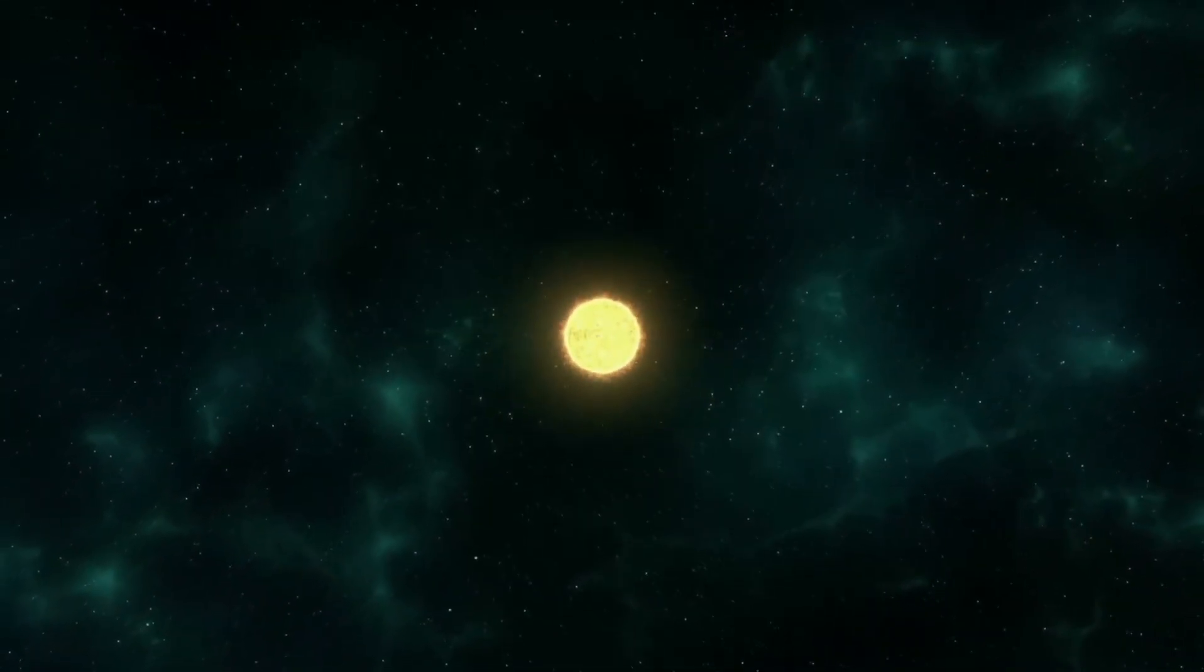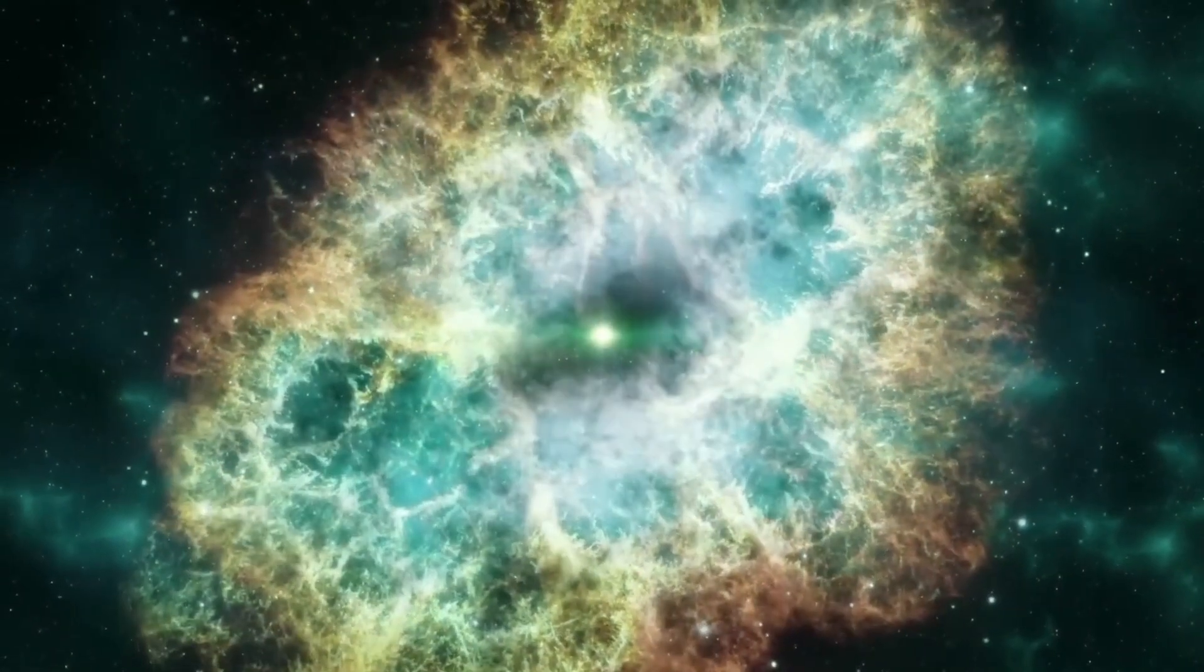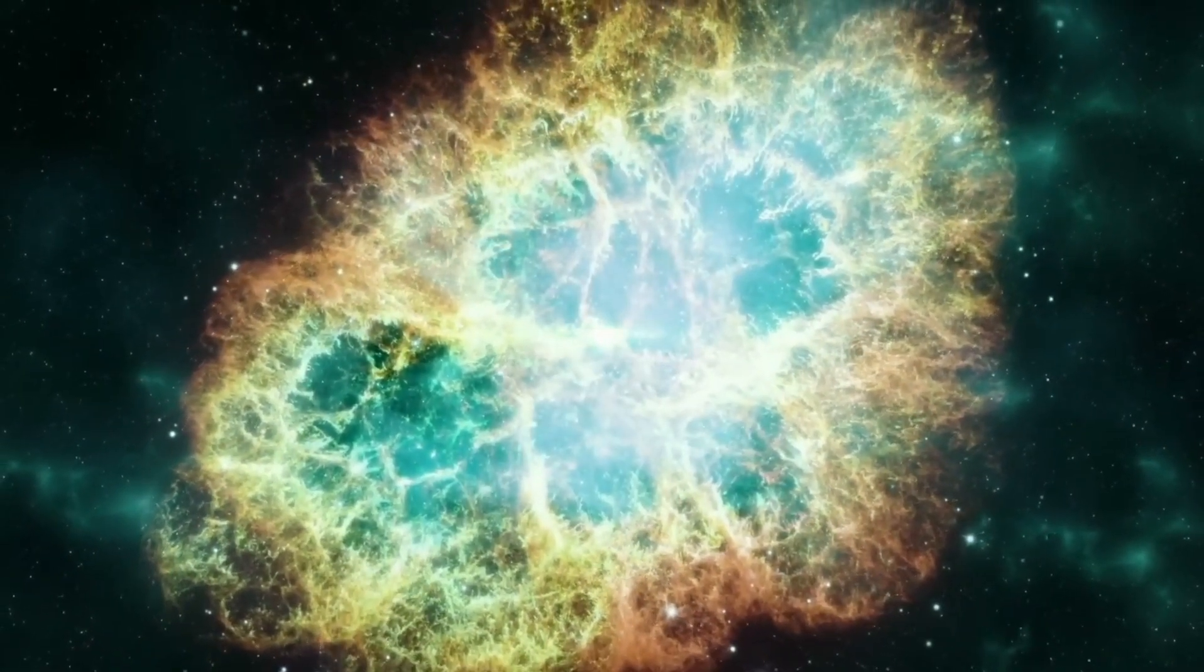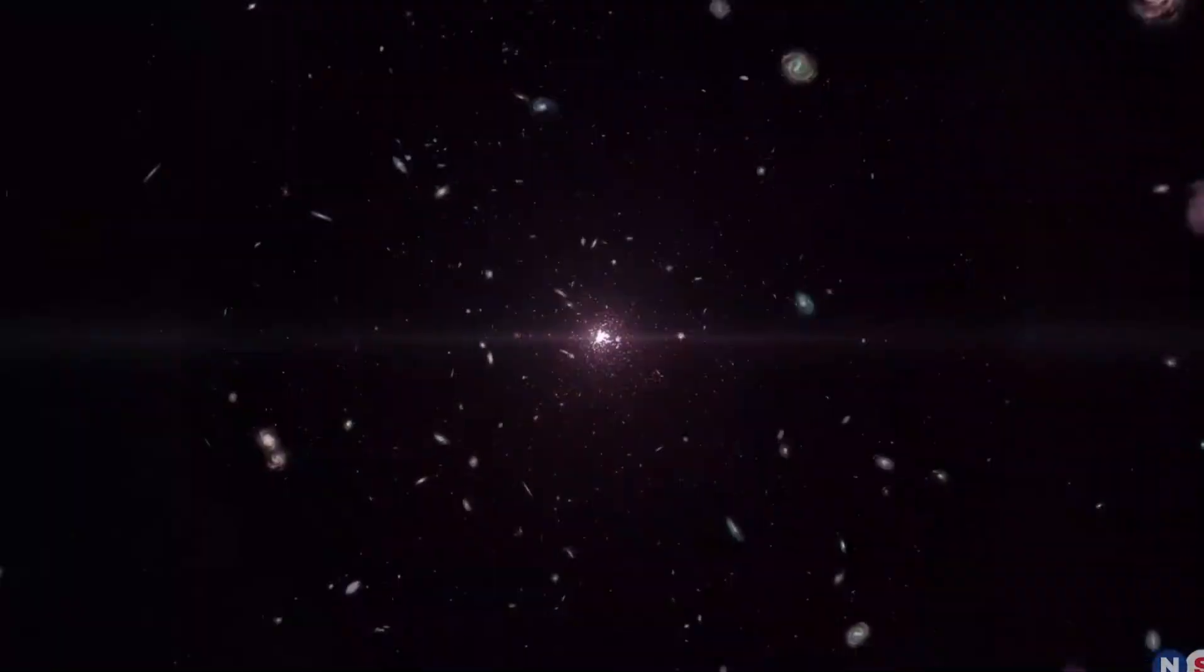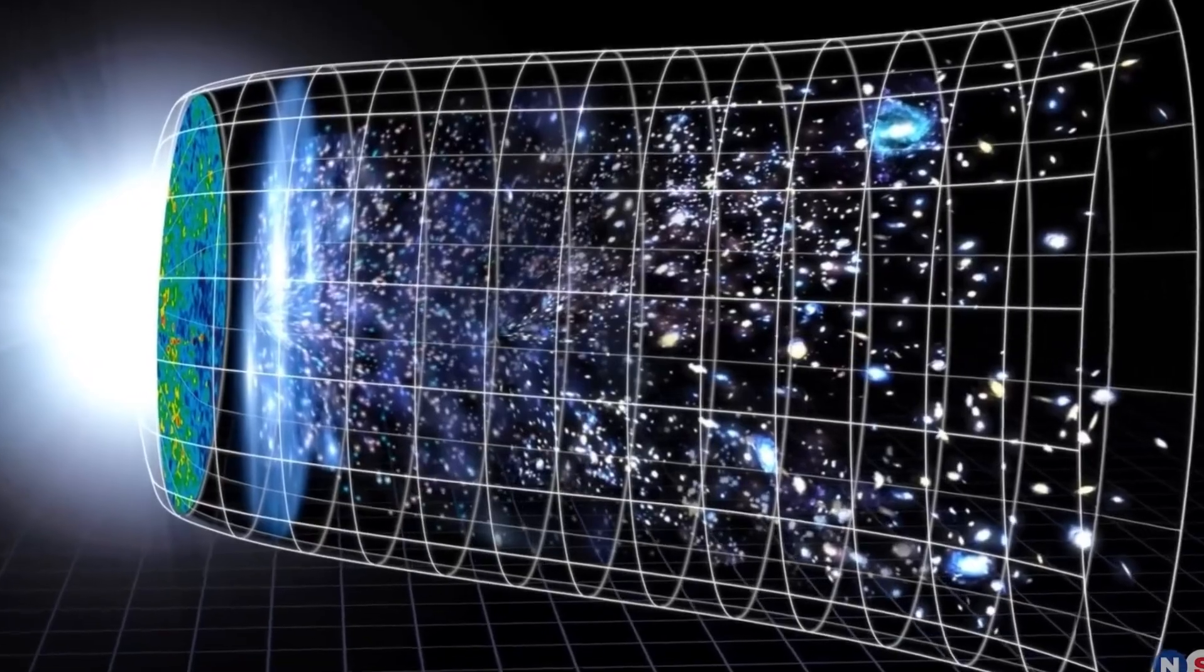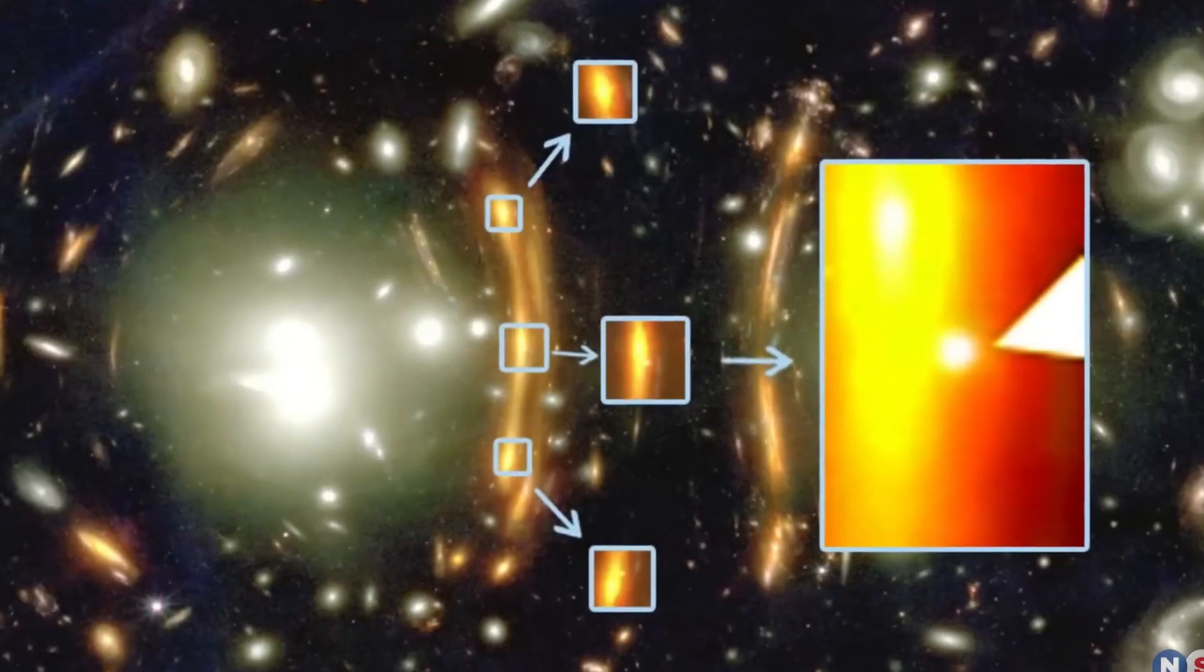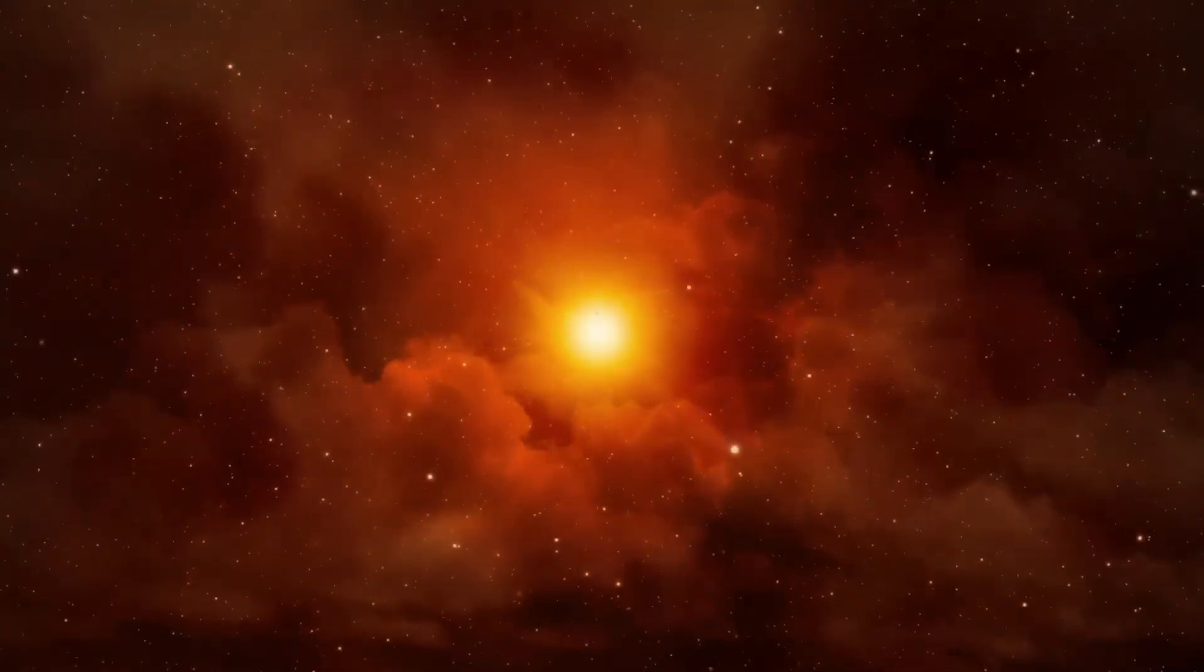OSIRIS-REx, after traveling over 4 billion miles to reach Bennu and return, released its sample return capsule while about 63,000 miles above Earth. The capsule, containing 250 grams of rock and material from Bennu, experienced intense heat as it descended through Earth's atmosphere, reaching speeds of 27,000 miles per hour.